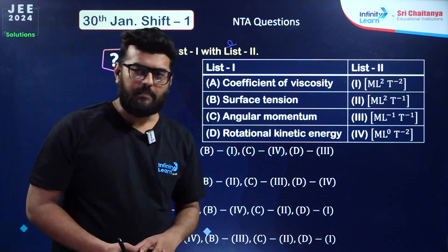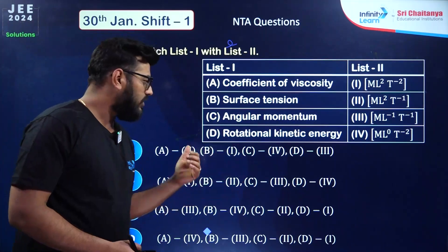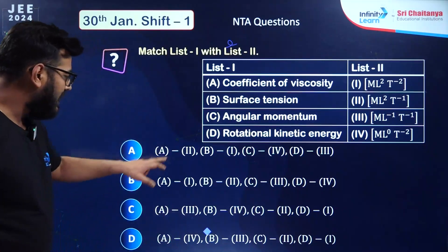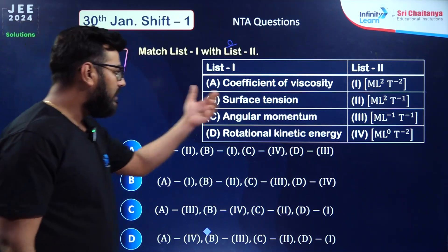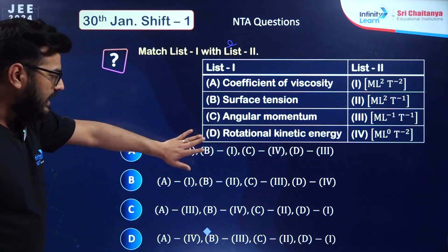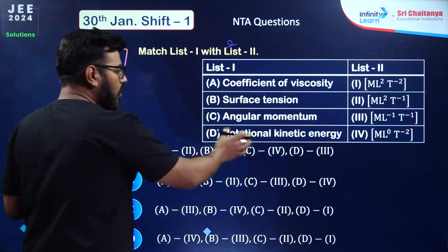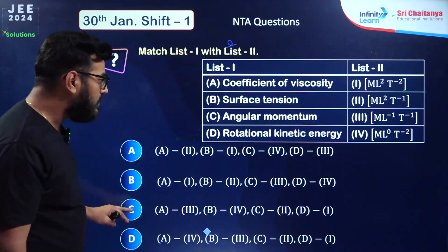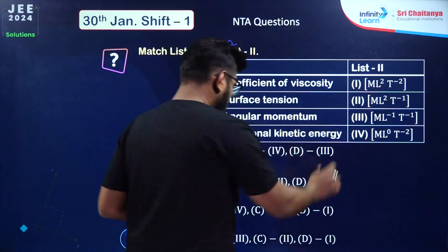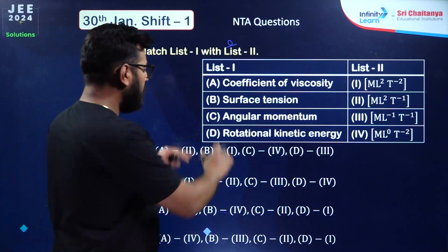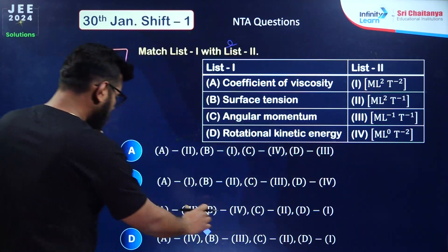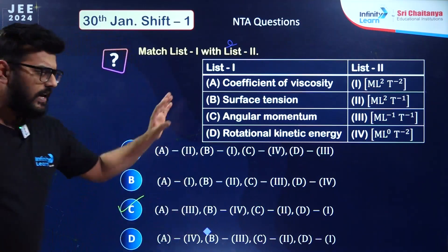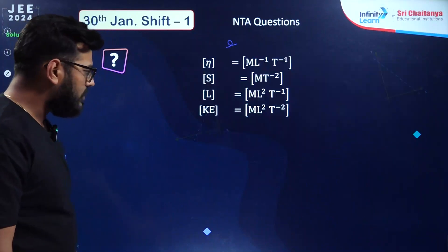The first question was of match-the-column type. Four quantities were given: coefficient of viscosity, surface tension, angular momentum, and rotational kinetic energy. You can just see whichever one is correct. If you know D, which is force into displacement and kinetic energy, that's ML²T⁻², and surface tension is force per unit length which is ML⁰T⁻². Option number C is the correct answer. Topic was units and dimensions.